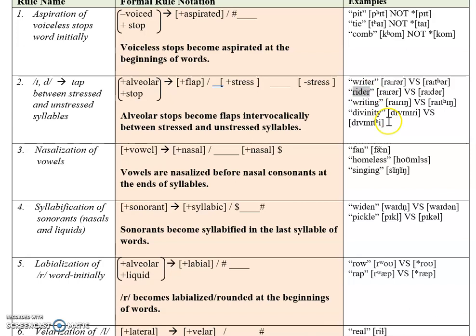Pronounce the word quickly — 'writer', 'writer' — and you could hyper-articulate and say 'rider,' but that's not normally what we do. Normally, subconsciously, it becomes a little bit reduced. The same applies to 'writing' and 'divinity.'